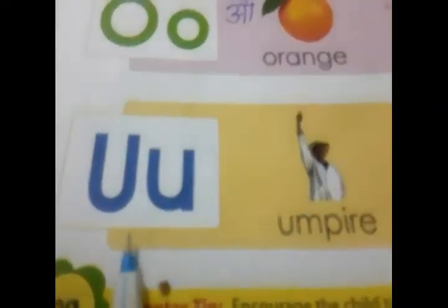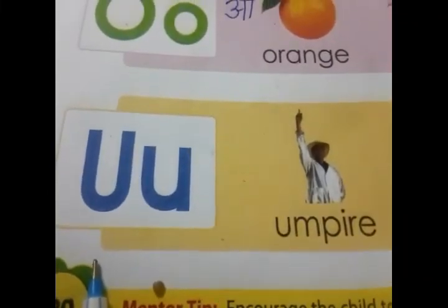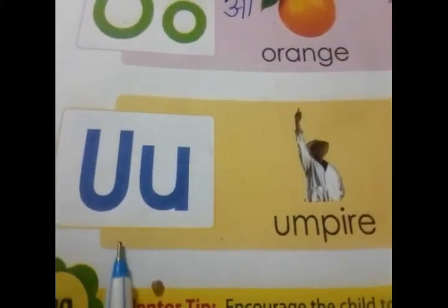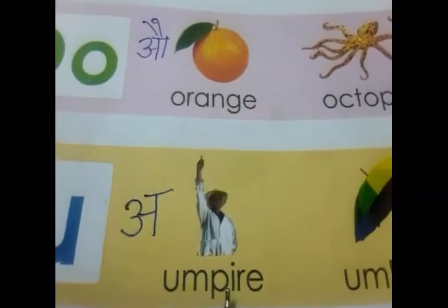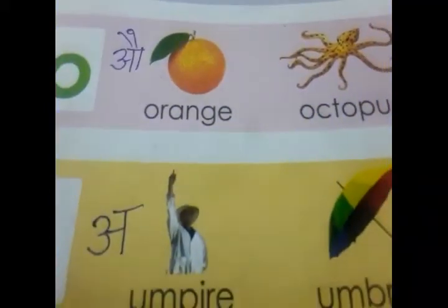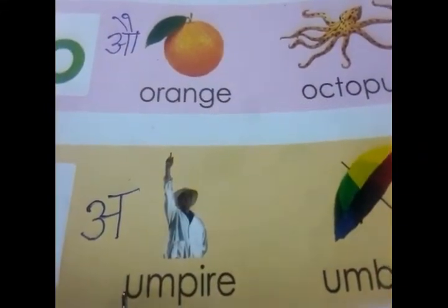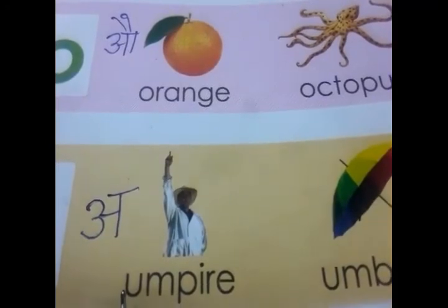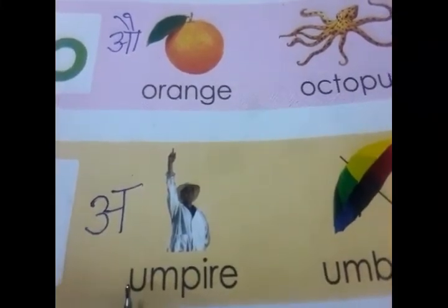Next vowel is U. Its sound is 'a' — like umbrella, amrela. If I take the word B-U-S, bus — so the sound of U comes as 'a'. So we learn the U sound is 'a'.